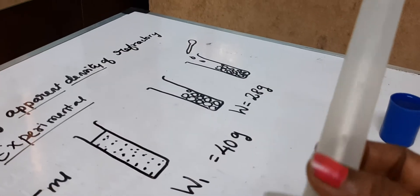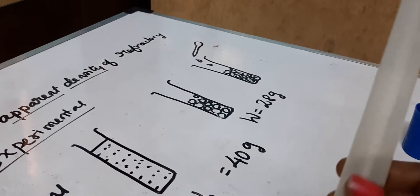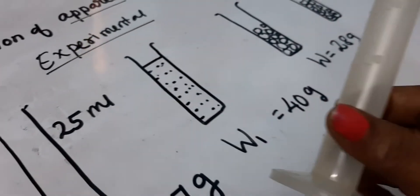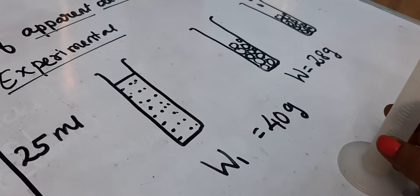First we have to take the weight of this measuring cylinder using a digital balance. That measures about 17 grams.